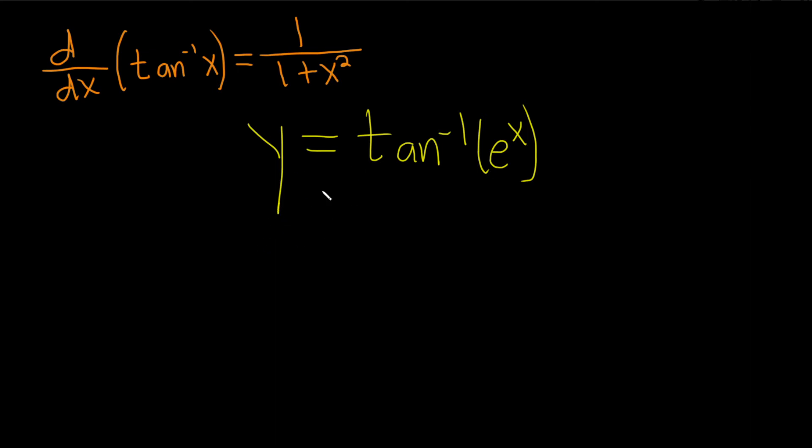Here we're going to take the derivative of this and we're going to use the chain rule. What you do is you take the derivative of the outside function, inverse tangent. So 1 over 1 plus, except you leave the inside function untouched. So this is e to the x squared. So instead of x, it's e to the x.